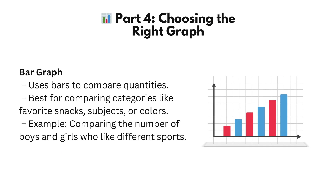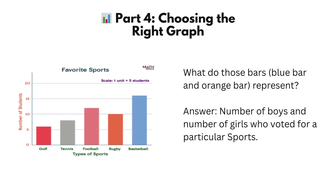Bar graph: uses bars to compare quantities. Best for comparing categories like favorite snacks, subjects, or colors. Example: comparing the number of boys and girls who like different sports. What do those bars — the blue bar and orange bar — represent? Correct. They represent the number of boys and number of girls who voted for a particular sport.